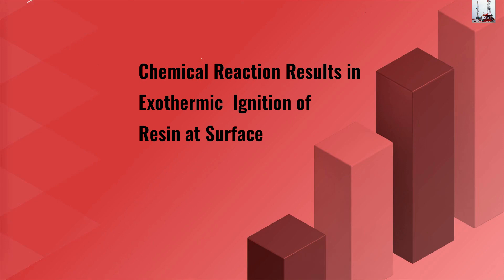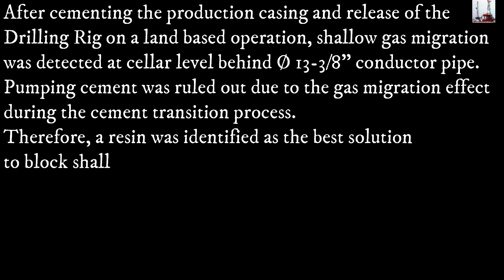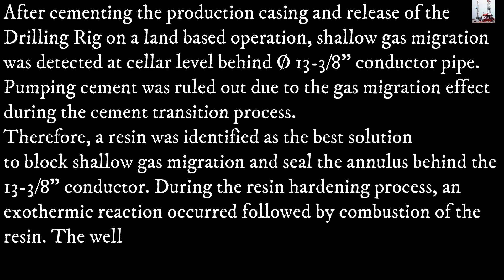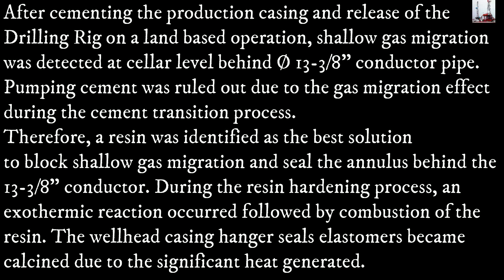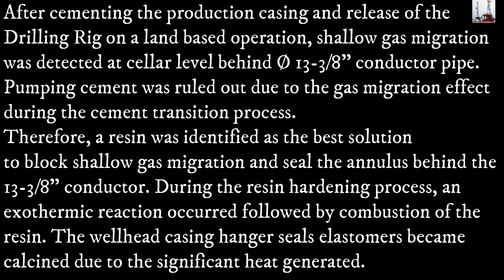Chemical reaction results in exothermic ignition of resin surface. After cementing the production casing and release of the drilling rig on a land-based operation, shallow gas migration was detected at cellar level behind the O13-3/8ths conductor pipe. Bumping cement was ruled out due to the gas migration effect during the cement transition process. Therefore, a resin was identified as the best solution to block shallow gas migration and seal the annulus behind the O13-3/8ths conductor.